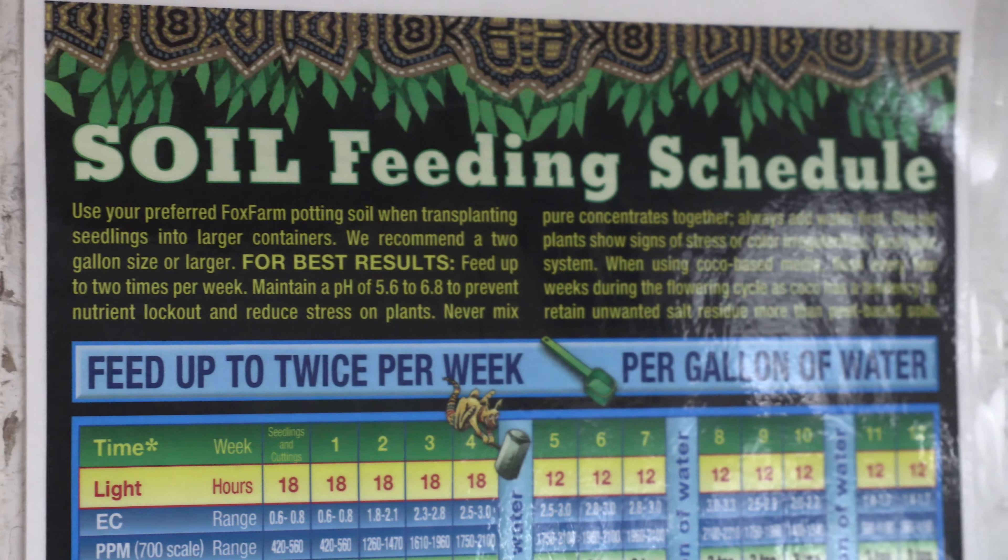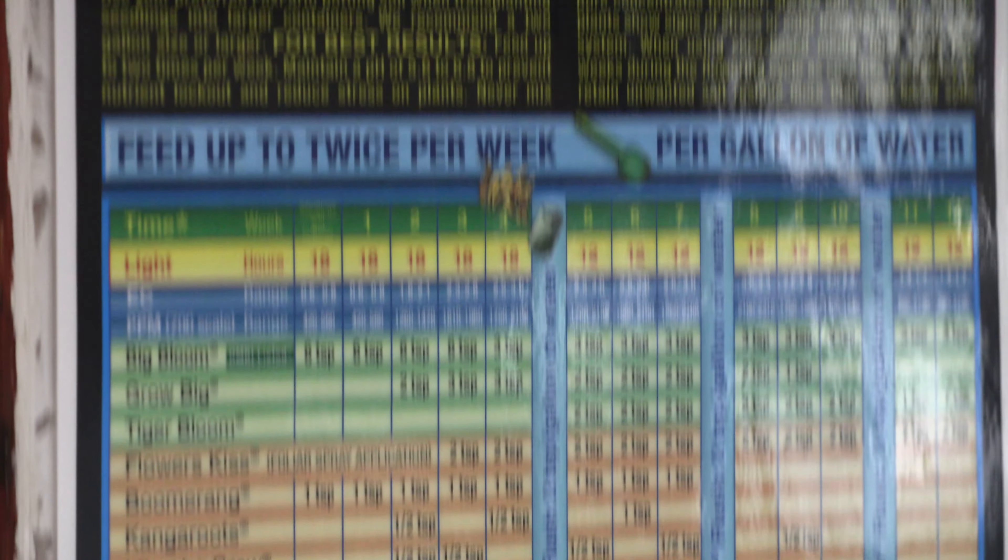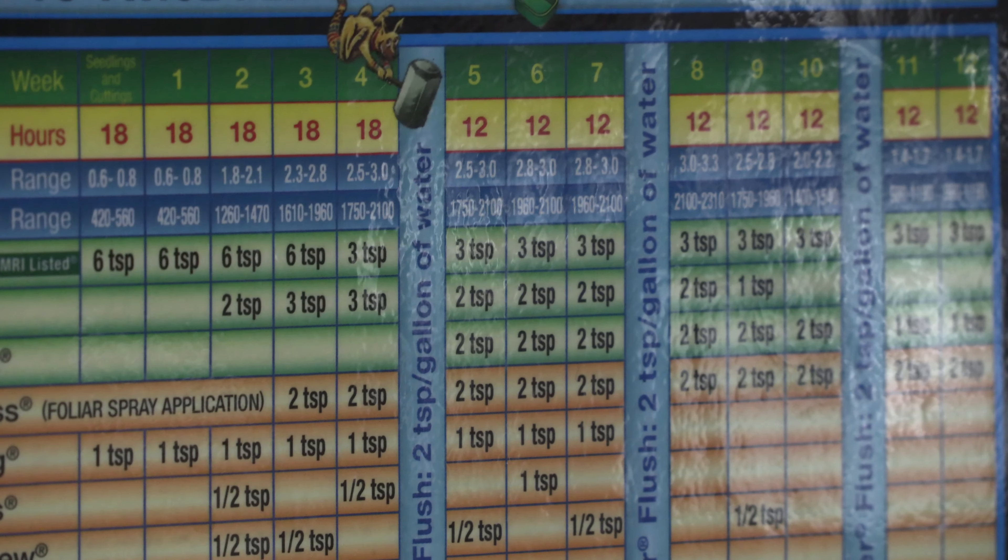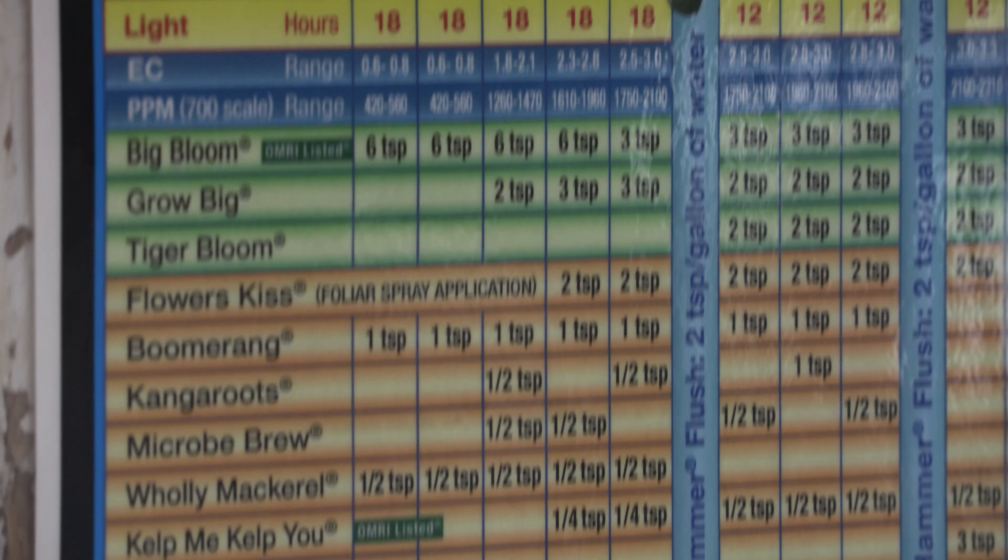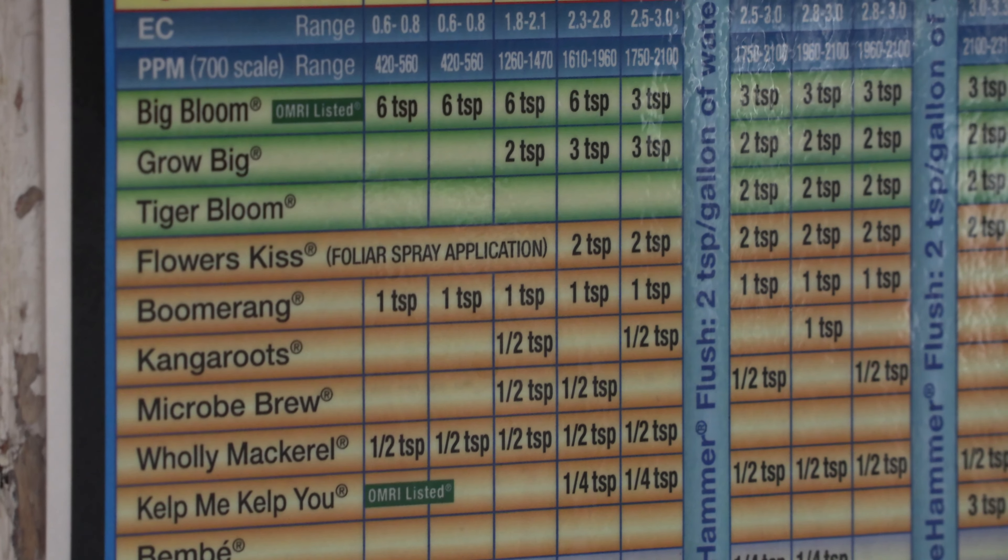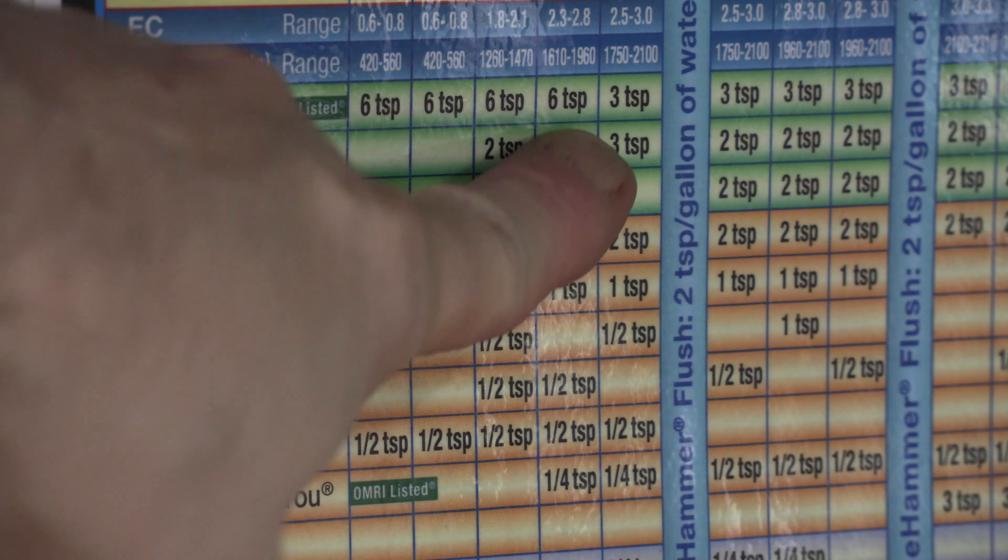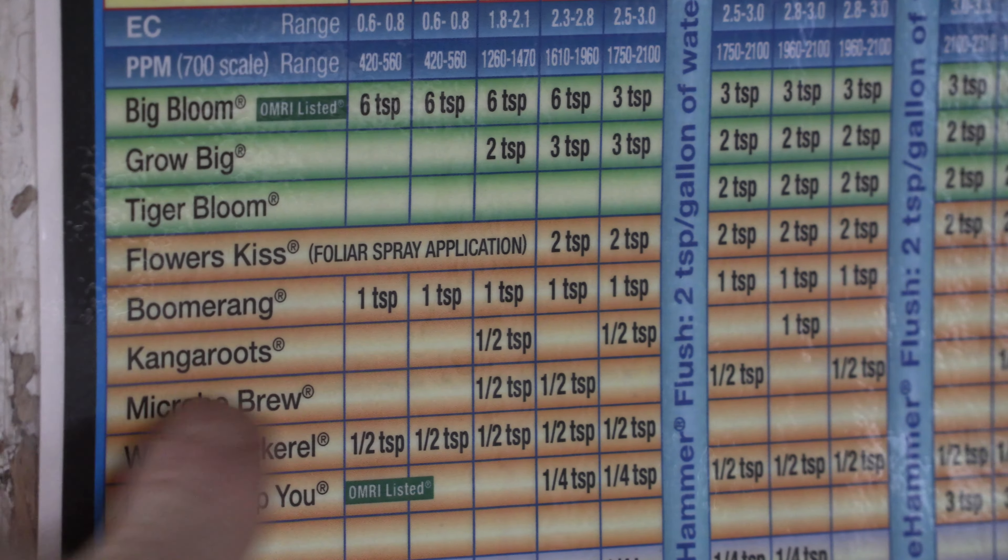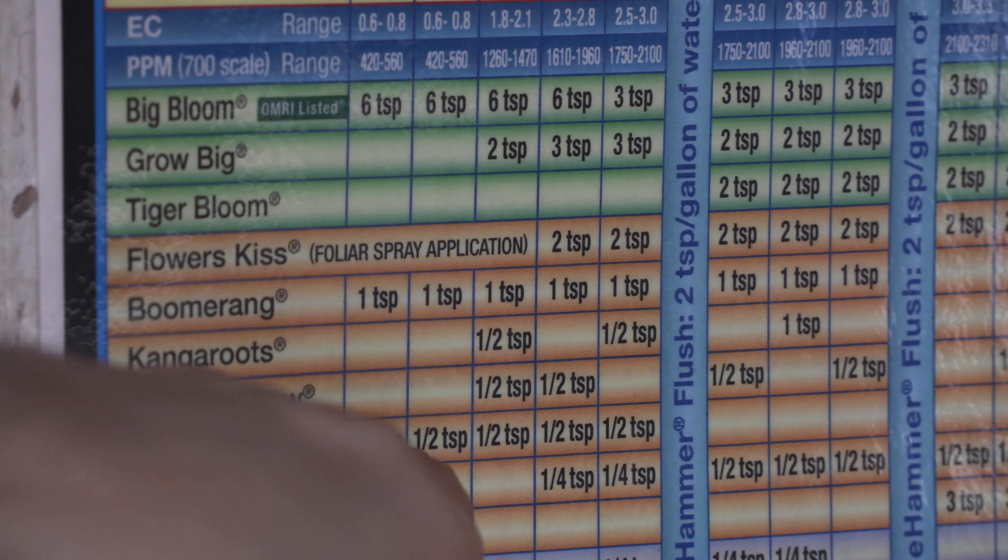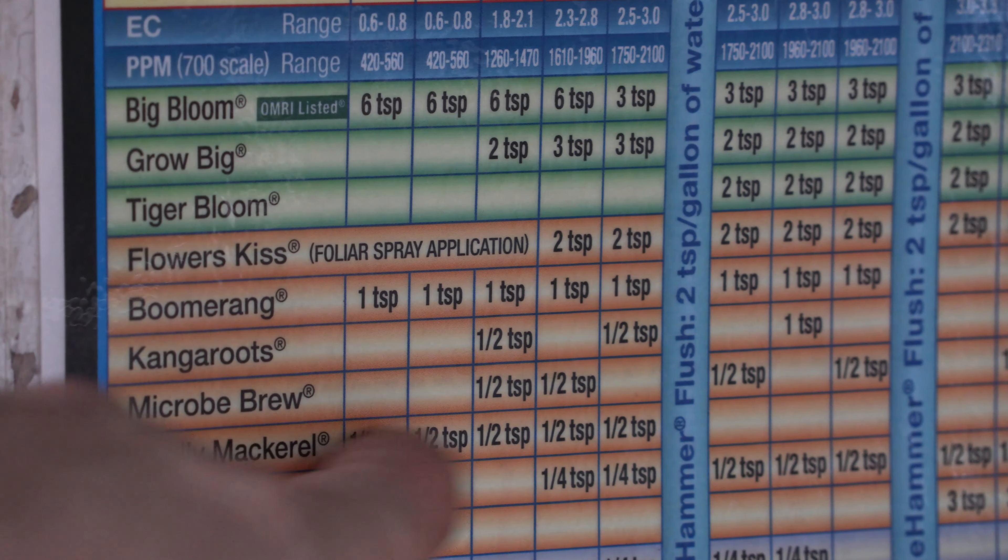So it's Recharge and we're going to be doing this based off of this Fox Farm schedule over here. I hardly have any room anymore. Right here we're going to follow this schedule, the Fox Farm soil feeding schedule, and we're going to make the fifth week veg. So we're actually going to go off the fourth week right here. We're going to use Big Bloom and Grow Big.